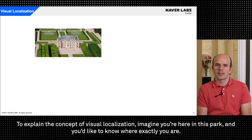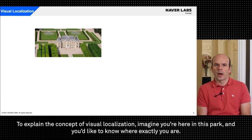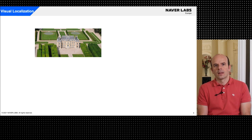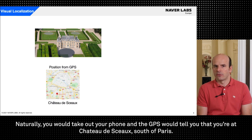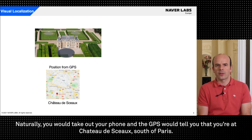To explain the concept of visual localization, imagine you're here in this park and you'd like to know where exactly you are. Naturally, you would take out your phone and the GPS would tell you that you are at Chateau de Sceaux, south of Paris.